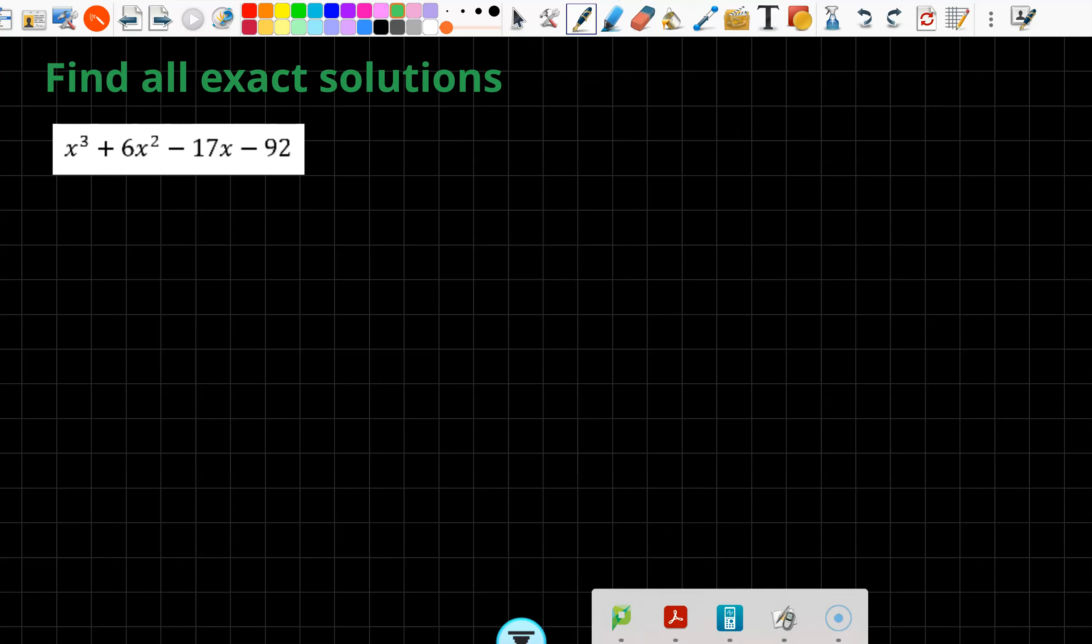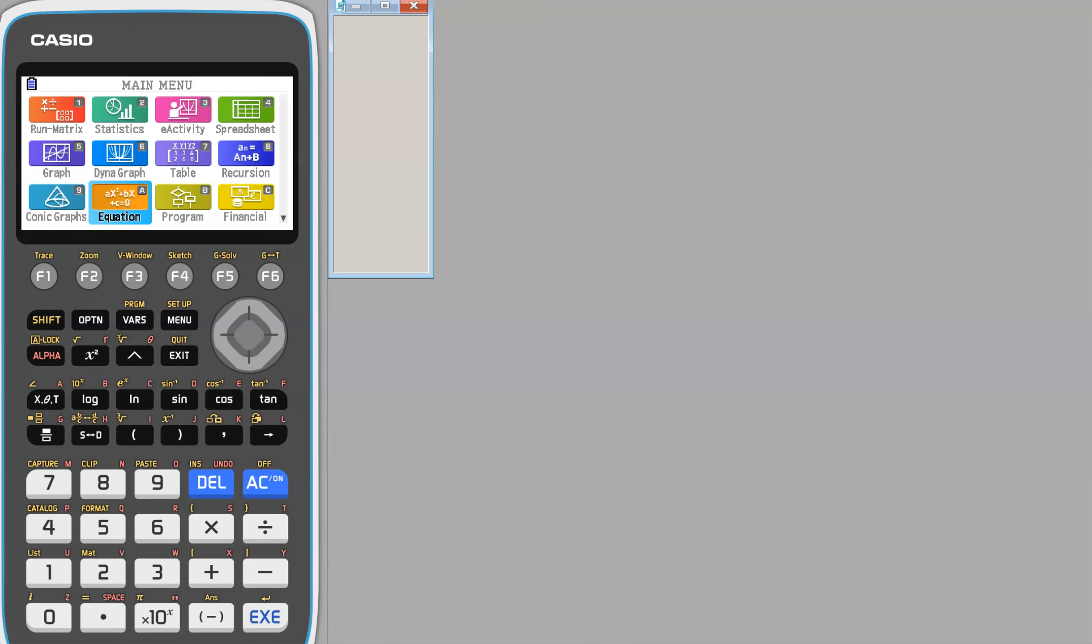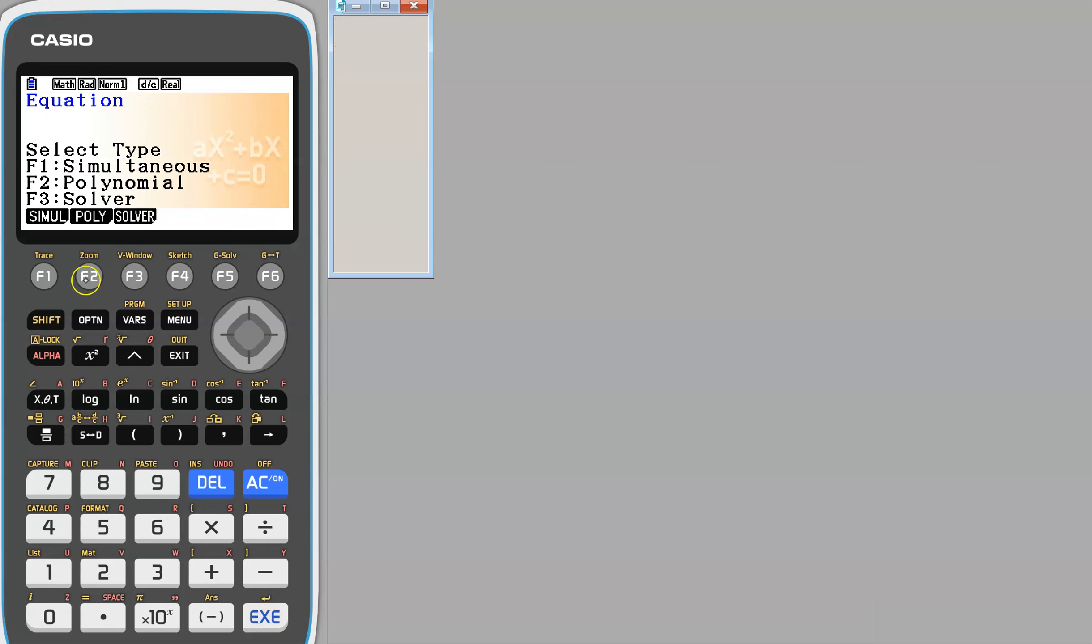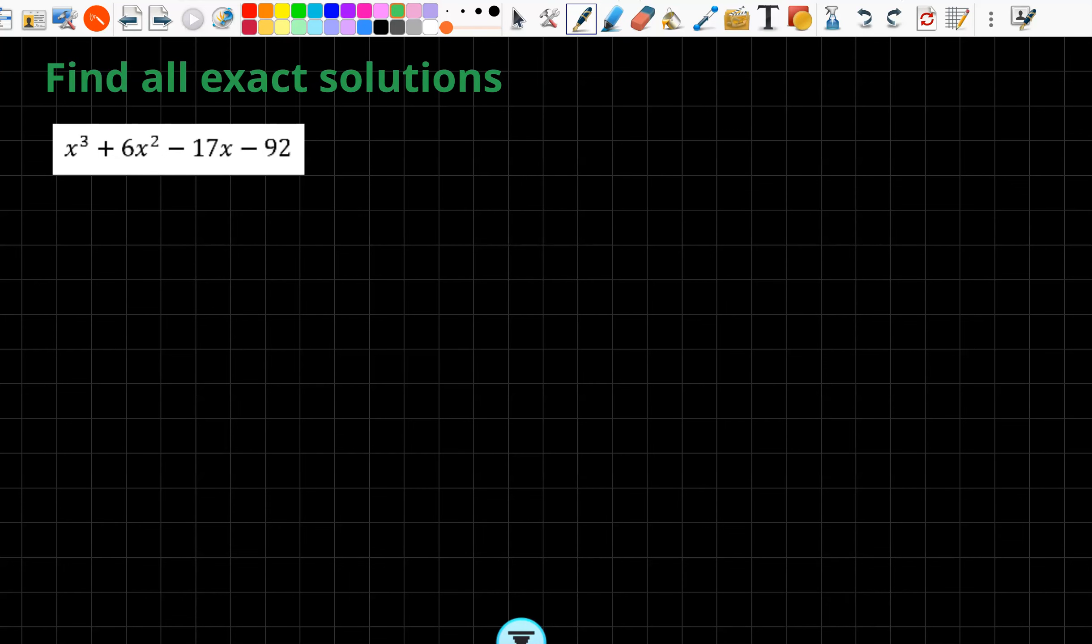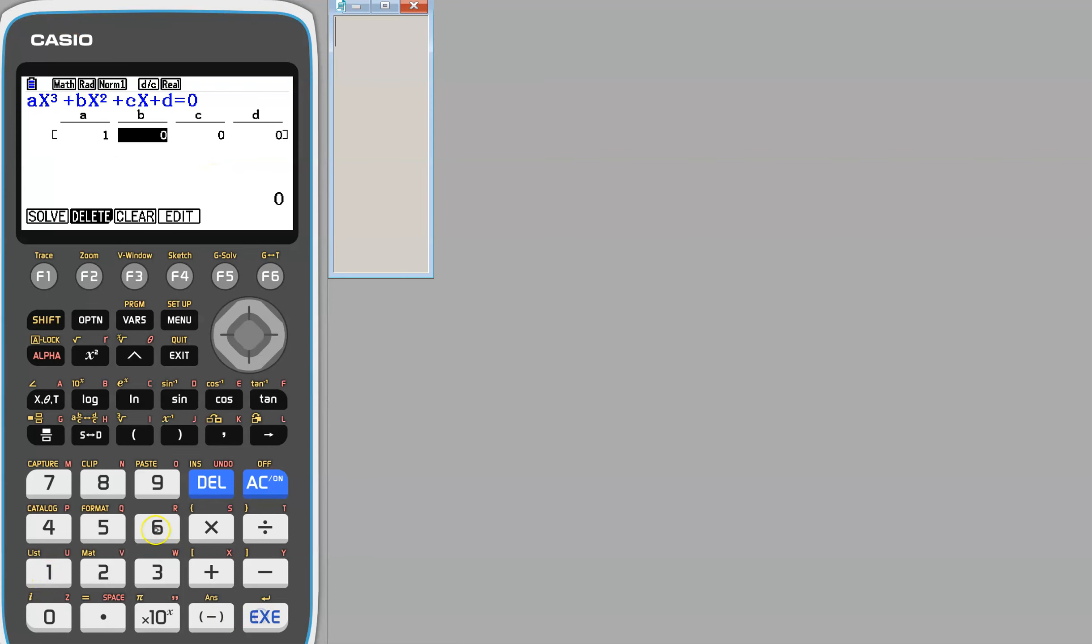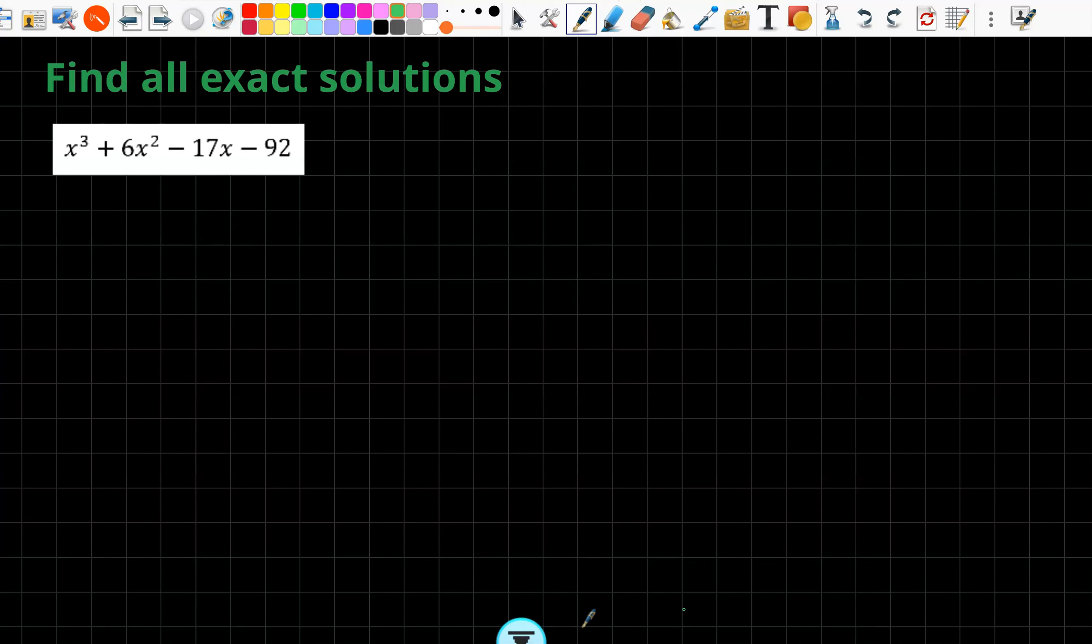All along the same lines, but now we've got this. And we can't really do anything. It doesn't tell us something is a zero. It doesn't tell us something is a factor. But that's okay. We have more ammo up our sleeves. We've got our graphics calculator. So we're going to go into equation, polynomial, F2 and degree 3. And what was the situation? So 1, 6, minus 17, 92.